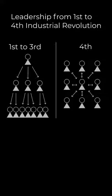The top-down approach was to tell people what to do from the top to the bottom, and then the people on the bottom executed. In the fourth industrial revolution, we have the knowledge workers.